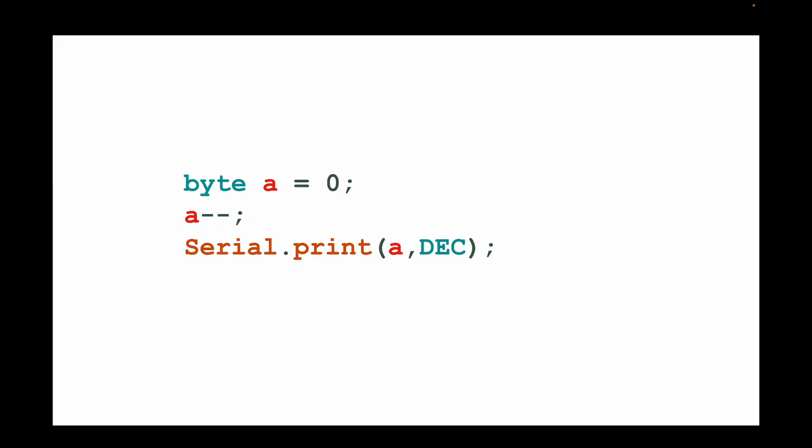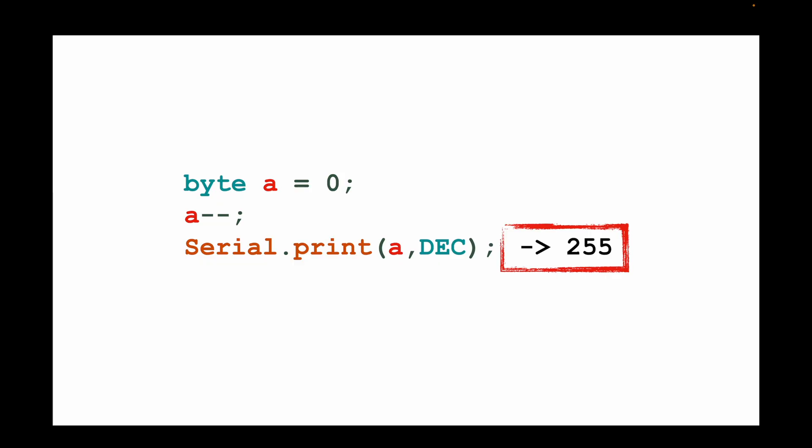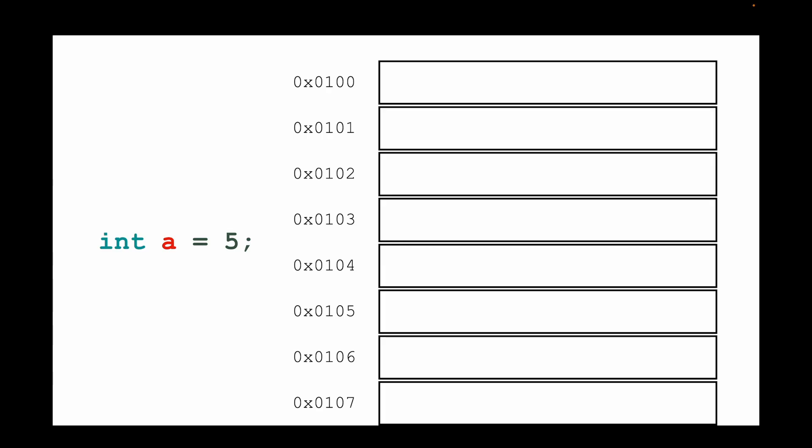What happens if we have zero and then we subtract one — we decrement zero by one? The result would be minus one, but byte is not able to store negative numbers, so the result is we jump back to 255, which is the maximum. So if you're at the minimum and try to go below it, you jump to the maximum.